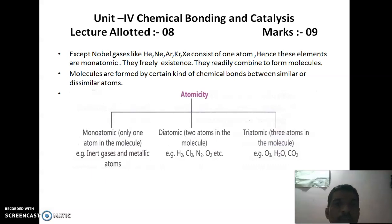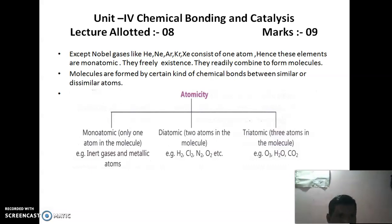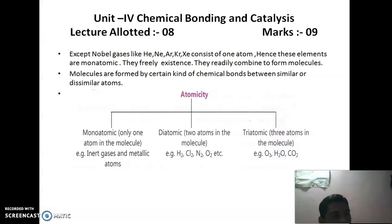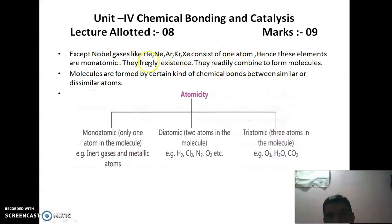Let us begin with chemical bonding. First, let us look at atomicity. The molecules of inert gases — helium, neon, argon, krypton, xenon — consist of only one atom. Hence, these elements are known as monoatomic.